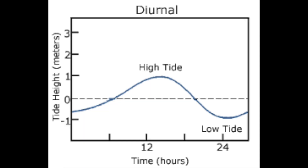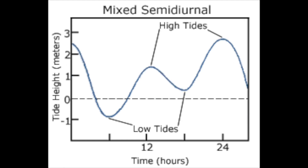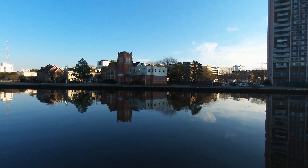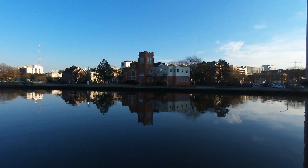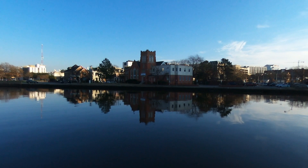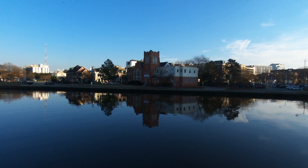There are three tidal patterns. Diurnal, which means one high and one low tide per day. Semi-diurnal, which means two high and two low tides. Mixed semi-diurnal, which means two high and two low tides of different sizes every day. Norfolk experiences mixed semi-diurnal tides.